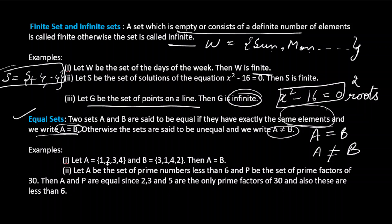Example: let A = {1, 2, 3, 4} and B = {3, 1, 4, 2}. Both sets have 4 elements. Checking each element: 1, 2, 3, and 4 are all present in both sets. Since all elements are the same, A = B.